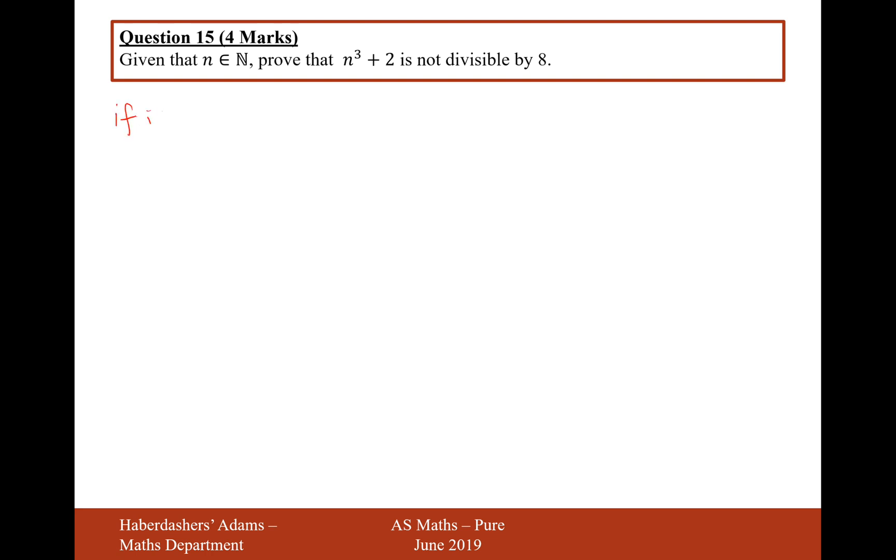If n is odd, then you can write n as 2a plus 1, where a exists in the natural numbers as well. Therefore, n cubed plus 2 is going to equal 2a plus 1 cubed plus 2. Let's now work this out. We're going to expand the brackets: 2a plus 1 times 2a plus 1 times 2a plus 1 plus 2.